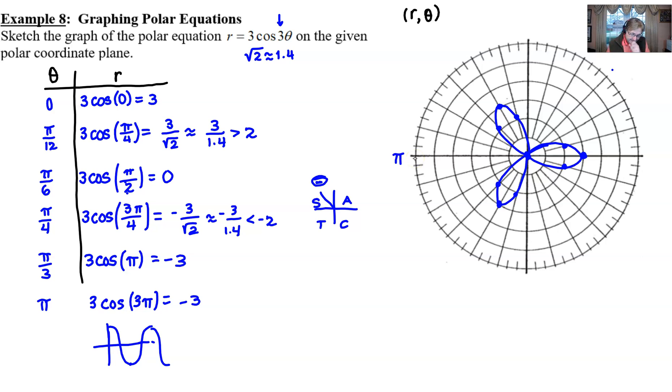Bottom line is we have this rose sketched already, and we notice that it has three petals. It graphs its entire appearance from 0 to π. If we kept going out to 2π, it would just graph itself over again.